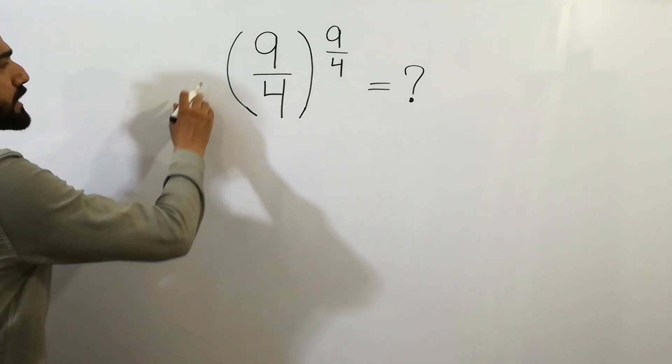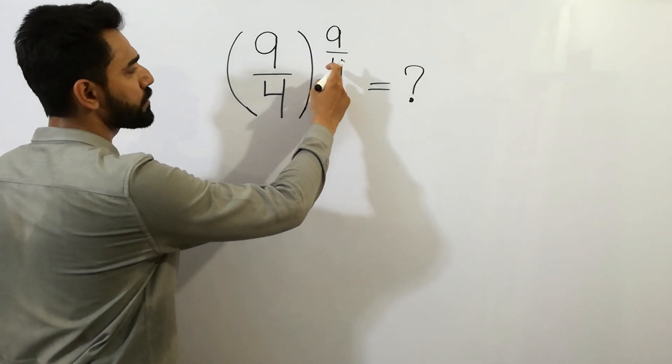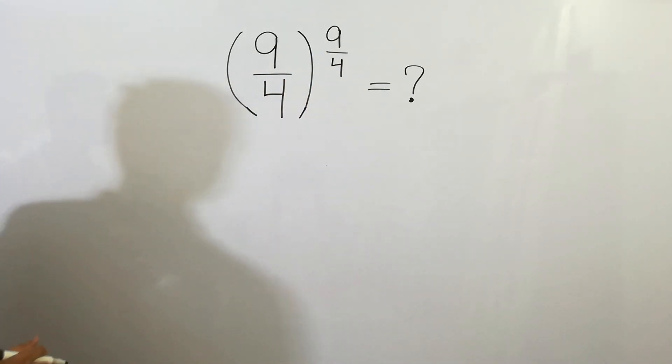Hey guys, 9 over 4 to the power 9 over 4 is equal to? Let's solve it.